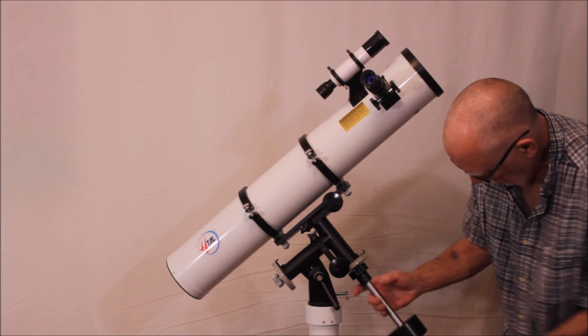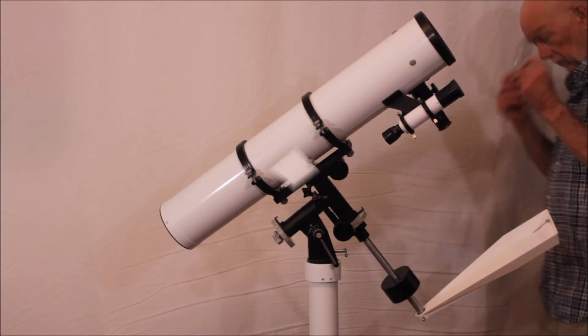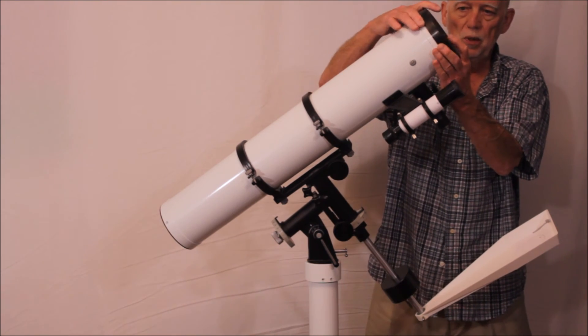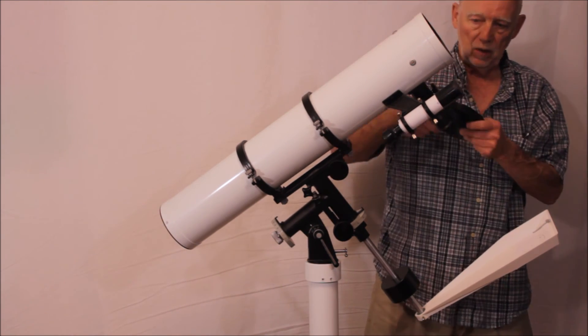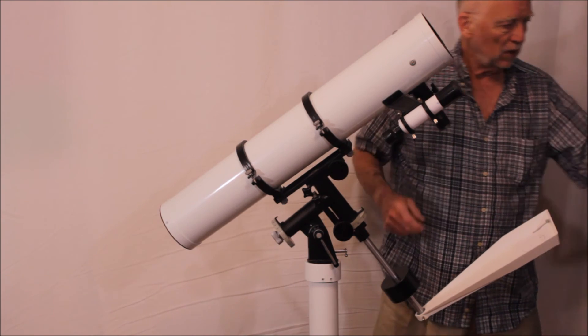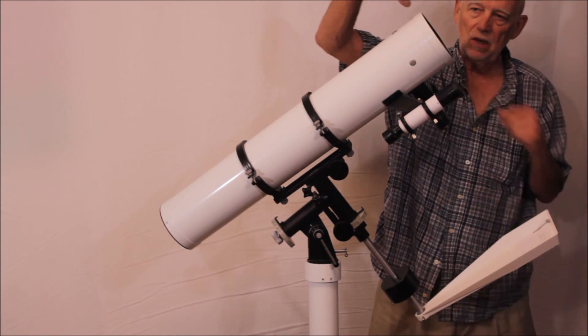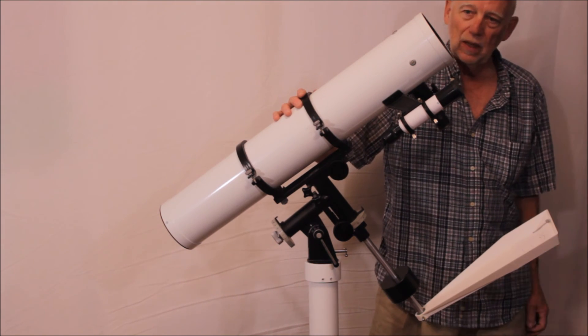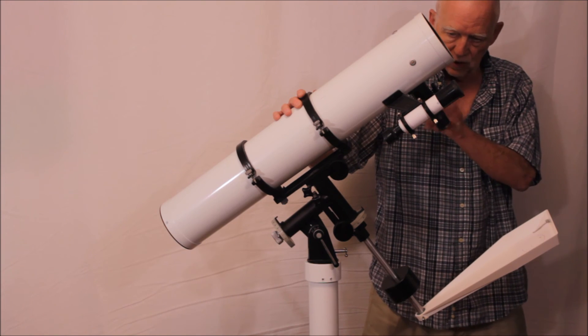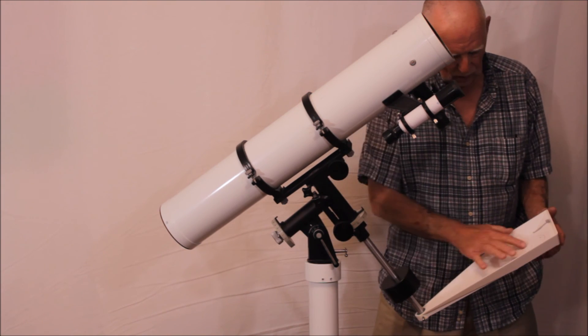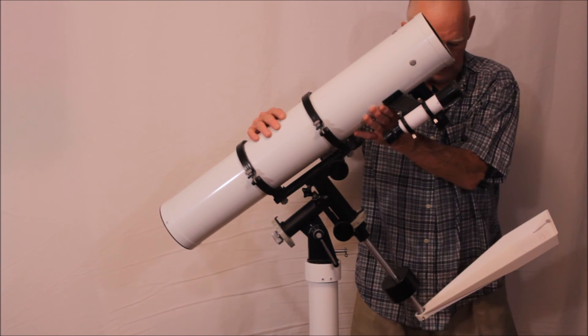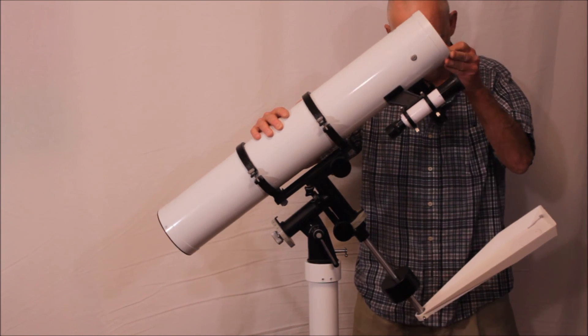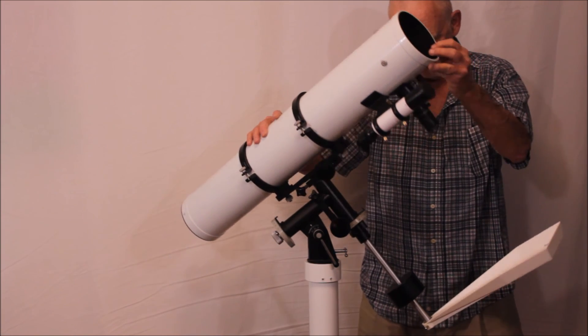Okay, so now the telescope is set up for solar projection. You would put some sort of an aperture stop here on the front, and I'm afraid I don't have that, but it's not hard to make - just a cover for this that allows maybe a one inch hole to allow a little bit of light in there for the sun. Then you project the image of the sun onto this piece of paper here.